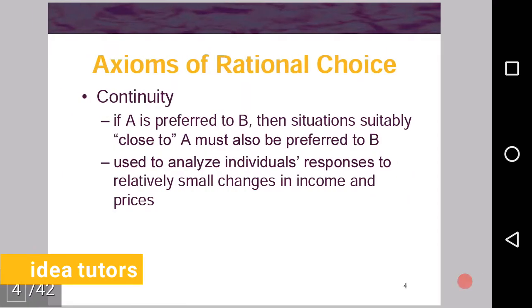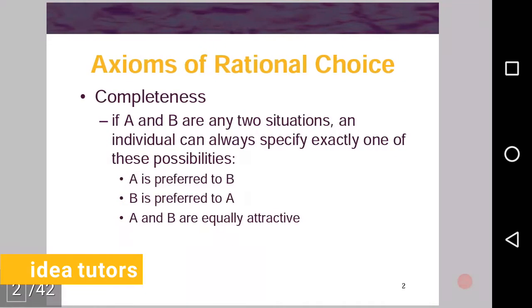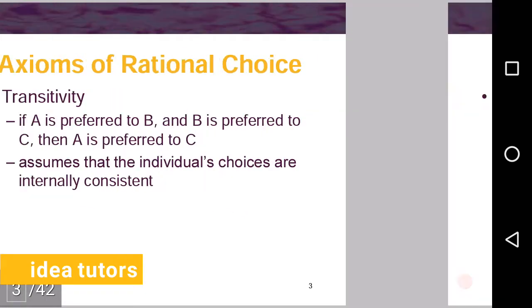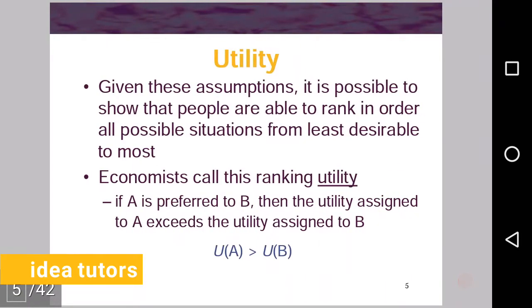Given the assumptions of completeness, transitivity, and continuity, it is possible to show that people are able to rank in order all possible situations from least desirable to most desirable or from most desirable to least desirable. They can rank their commodity preferences in order of preferences.